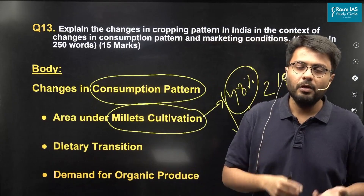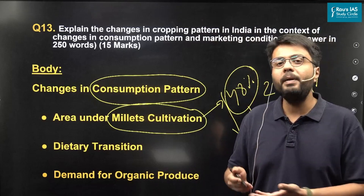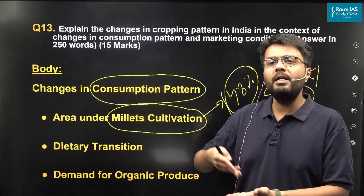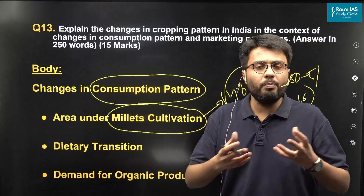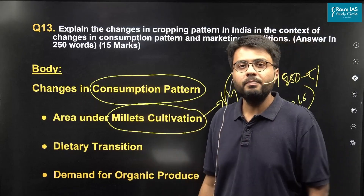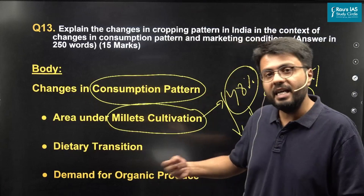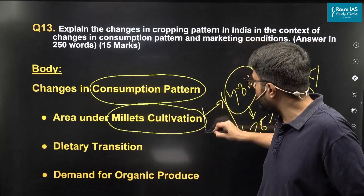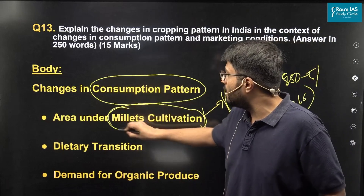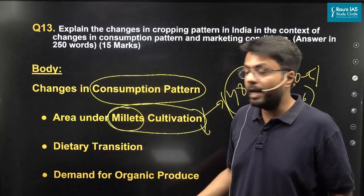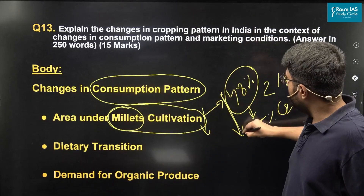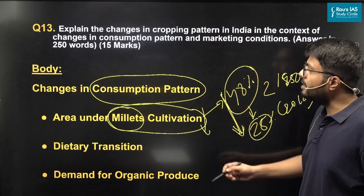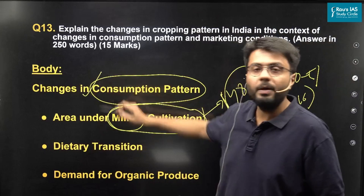For example, the government favors procurement of rice and wheat through their PDS program. Further, there are value-added products available for both rice and wheat, so people find it easier to consume those cereals and have started neglecting millets altogether. Thereby, millet consumption has reduced in the country, which also influences the cropping pattern.